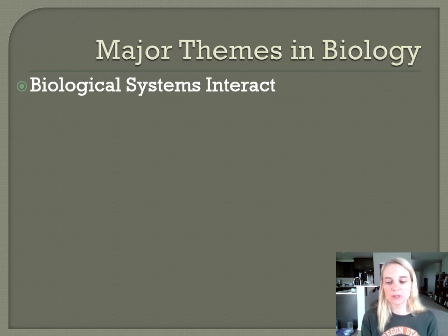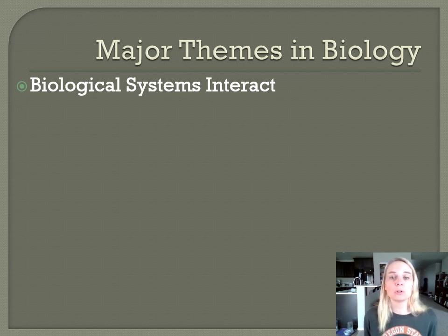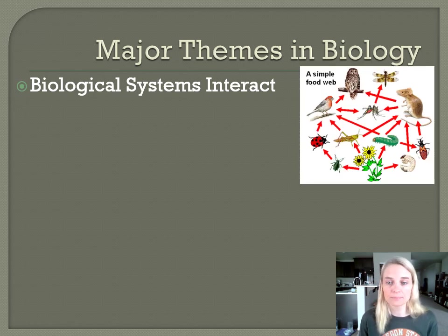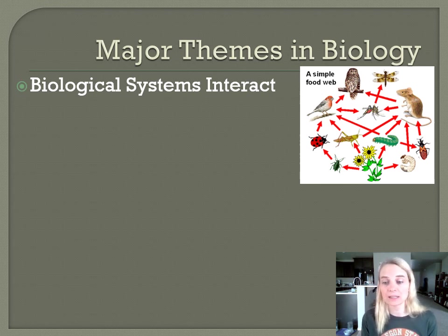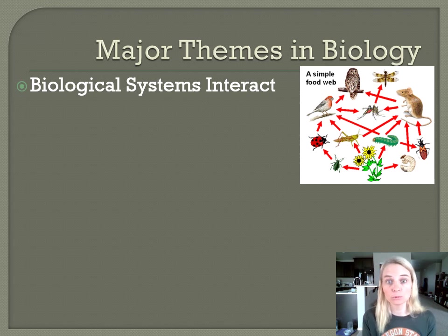Our first theme is called biological systems interact — the idea that one individual living organism cannot be isolated from all other organisms. They interact at the molecular level, the cellular level, organs, organ systems, and organism level. An example would be a food web: plants are the primary producers making sugar and nutrients; primary consumers like insects and caterpillars feed on those plants; second-level consumers like mice and birds feed on those herbivores; and upper-level consumers like the owl feed on those. Energy is transferred through the food web and all these organisms interact with each other.